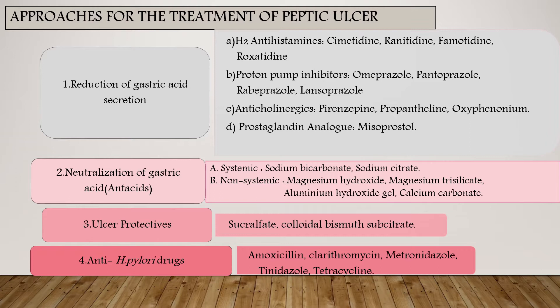Reduction of gastric acid secretion is done using H2 antihistamines, which include cimetidine, ranitidine, famotidine, and roxatidine. The second class is proton pump inhibitors: omeprazole, pantoprazole, rabeprazole, and lansoprazole. Third are anticholinergics: pirenzepine, propantheline, and oxyphenonium. Also, prostaglandin analogues — misoprostol — are used.